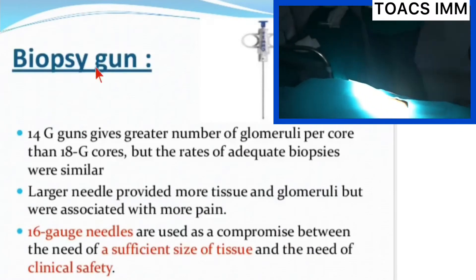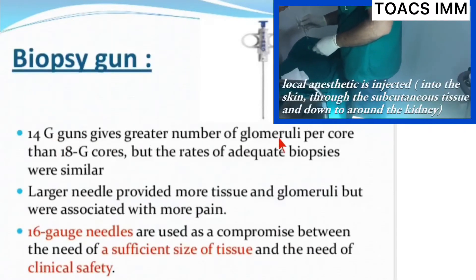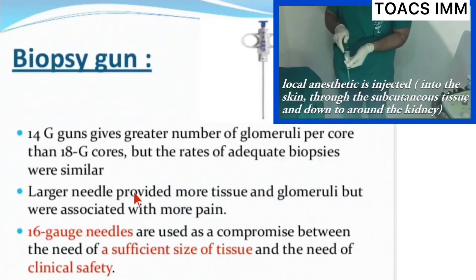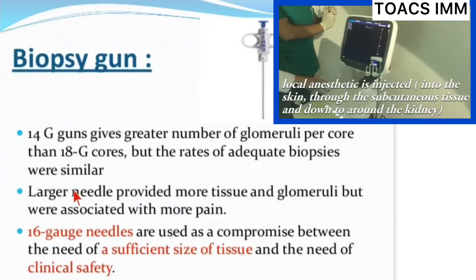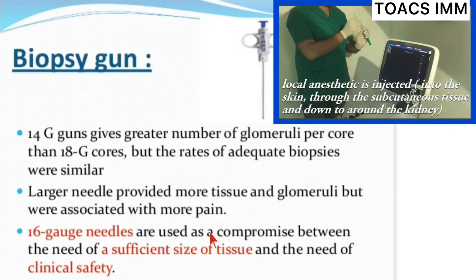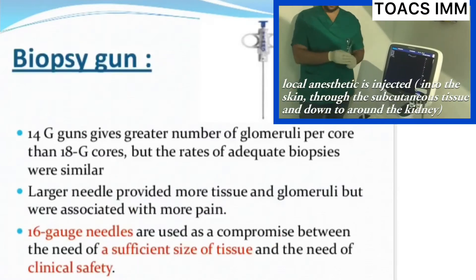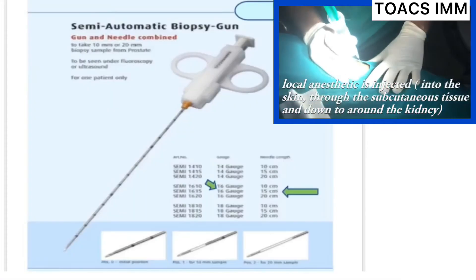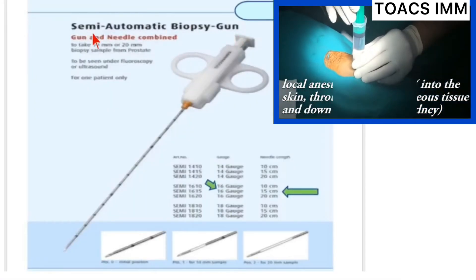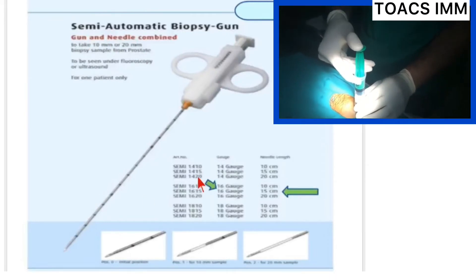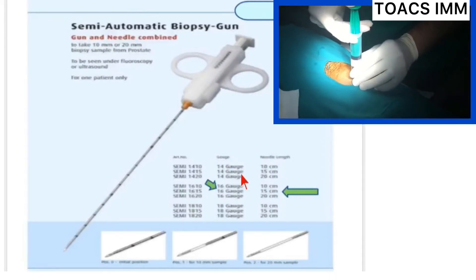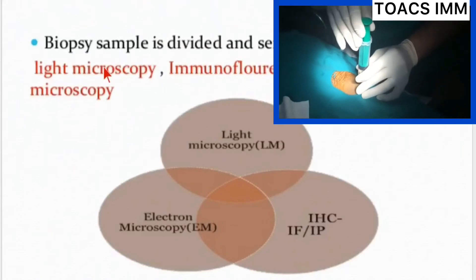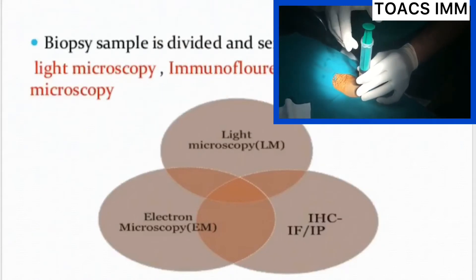Regarding the biopsy gun: a 14-gauge gun gives a greater number of glomeruli per core than an 18-gauge core, but the rates of adequate biopsy are similar. Larger needles provide more tissue and glomeruli but are associated with more complications. 15-gauge needles are most commonly used as a compromise between sufficient tissue and clinical safety. The biopsy sample is divided and sent for light microscopy, immunofluorescence, and electron microscopy.